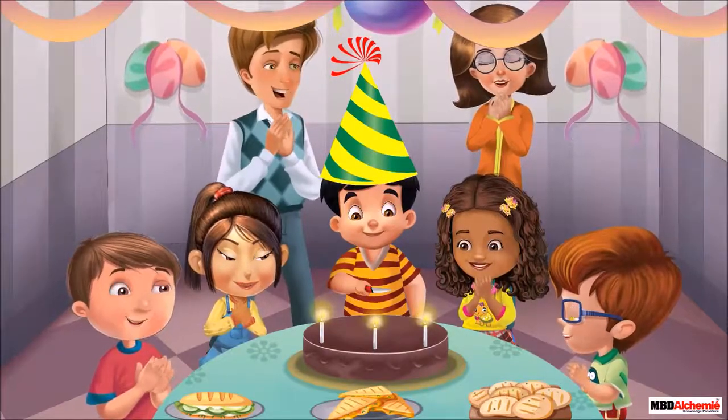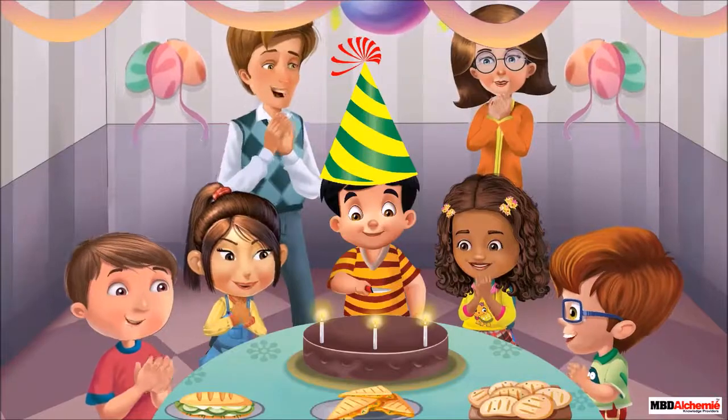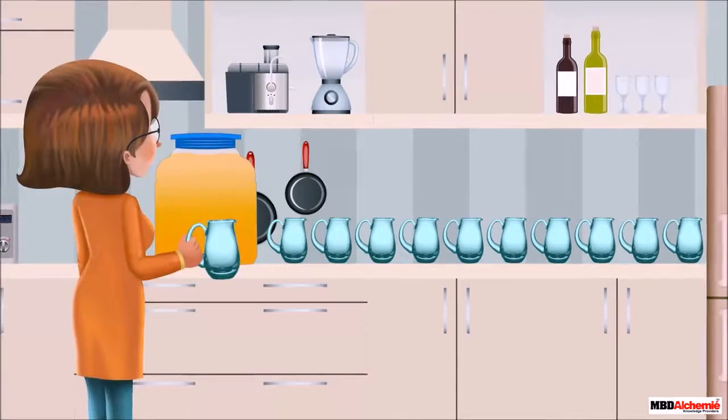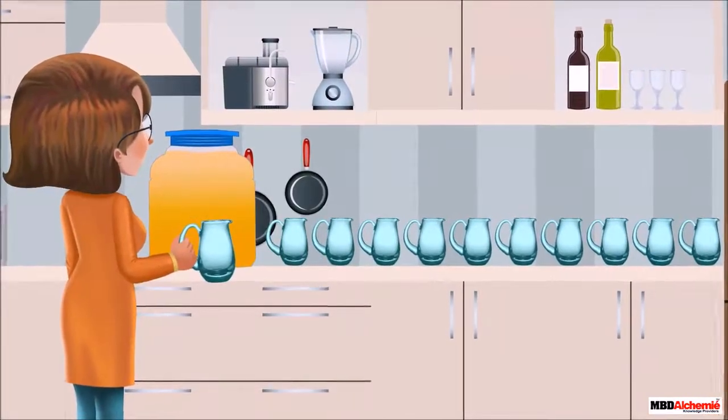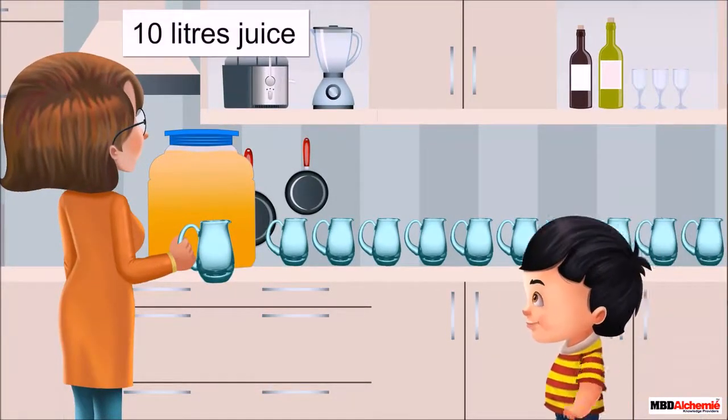Rhea and her family are celebrating Sid's birthday. Sid's mother is preparing fruit punch in a big container for all the children. She prepares 10 liters of juice.